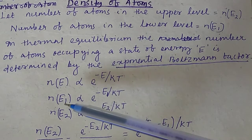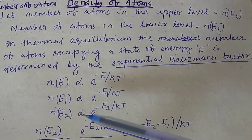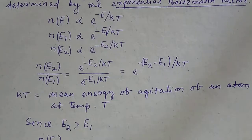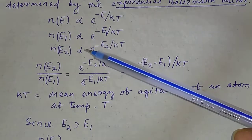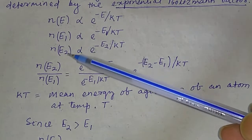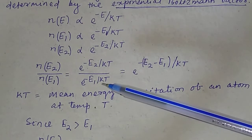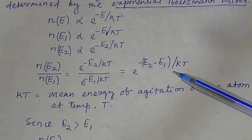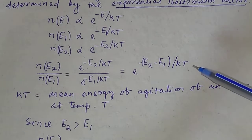For energy state E1, we write N(E1) proportional to e to the power minus E1 divided by KT. For energy state E2, we write N(E2) proportional to e to the power minus E2 divided by KT. Dividing these two equations, N(E2) divided by N(E1) equals e to the power minus (E2 minus E1) divided by KT. Here KT is called the mean energy of agitation of an atom at temperature T.